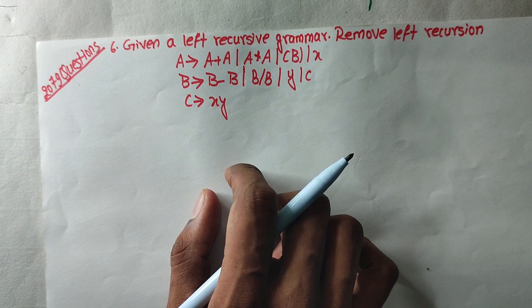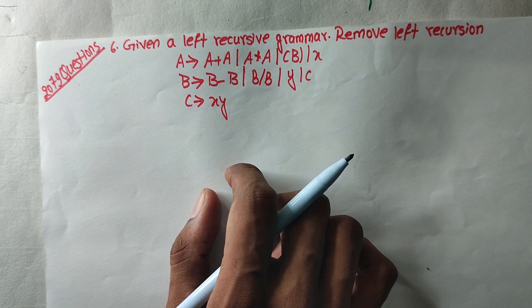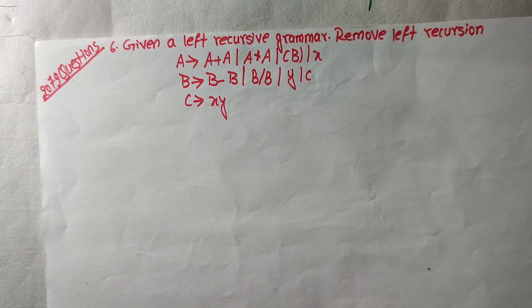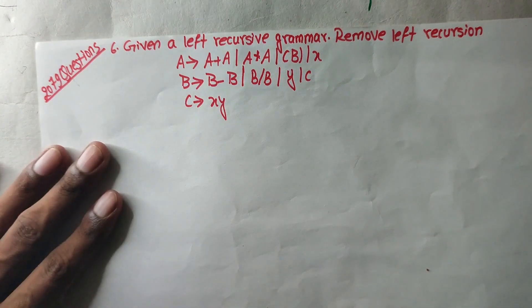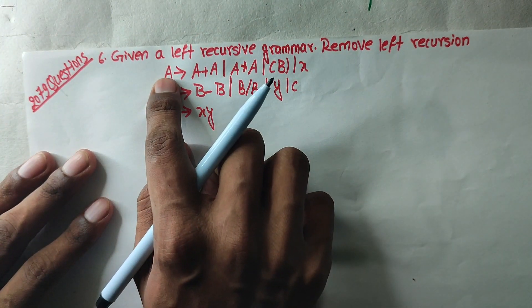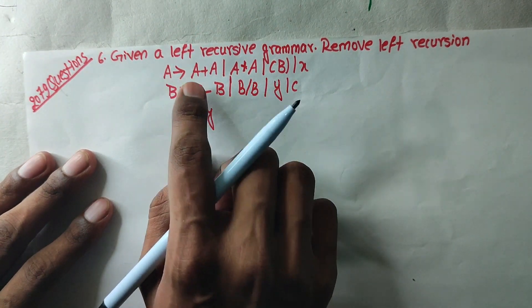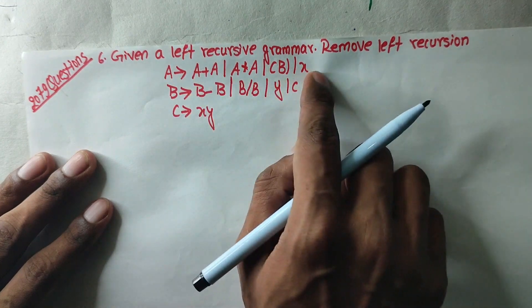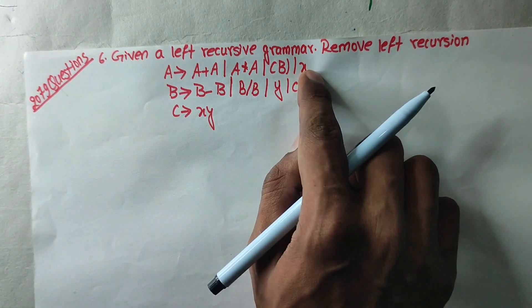If we want to identify the same, we will look at the left equation. If you want to identify the same question, if you want to see a from production, you will look at the left equation.